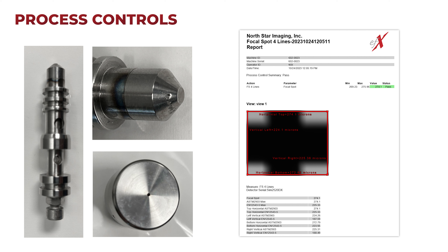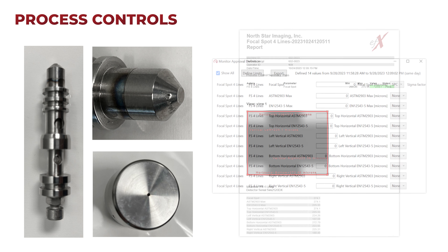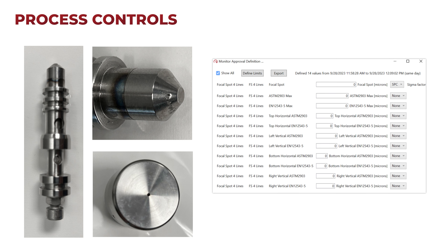Another great feature is that you can use this for process control. You can use it either at your technique setup specific to a part — measuring that focal spot time and time again, day after day, week after week, or month after month — to validate that you're still within a specific tolerance. Or you can use it as a system process control, measuring one specific setup representative of your system across all your applications and tracking that over time.